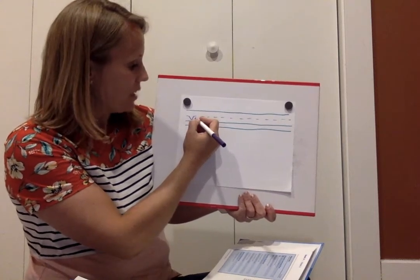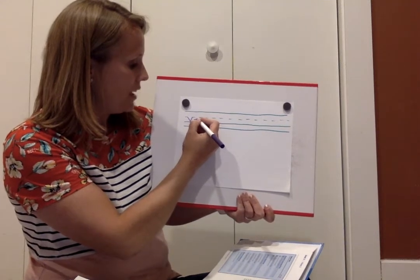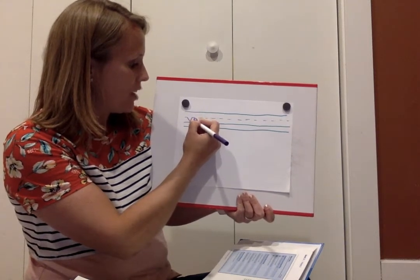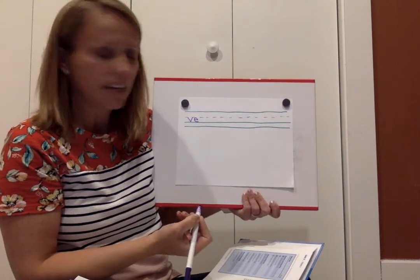E, start under the plain line, fly under the plain line, up to the plain line, around and land on the grass line.